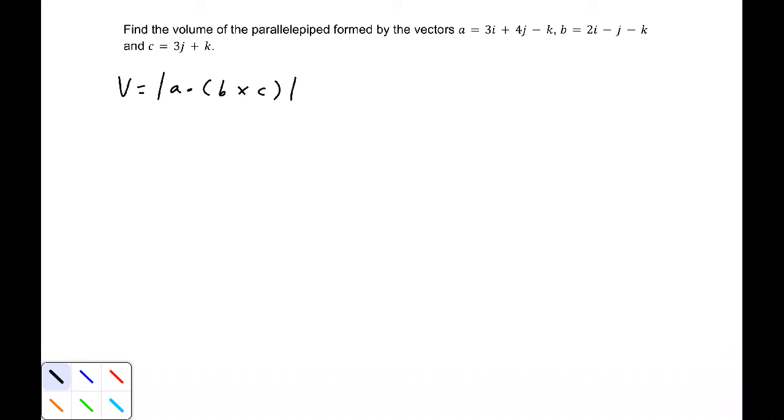So let's first find the cross product of b and c. b cross c will be equal to, in determinant notation: i, j, k, and then the vector b, which is 2, -1, -1, and the vector c, which is 0, 3, 1.